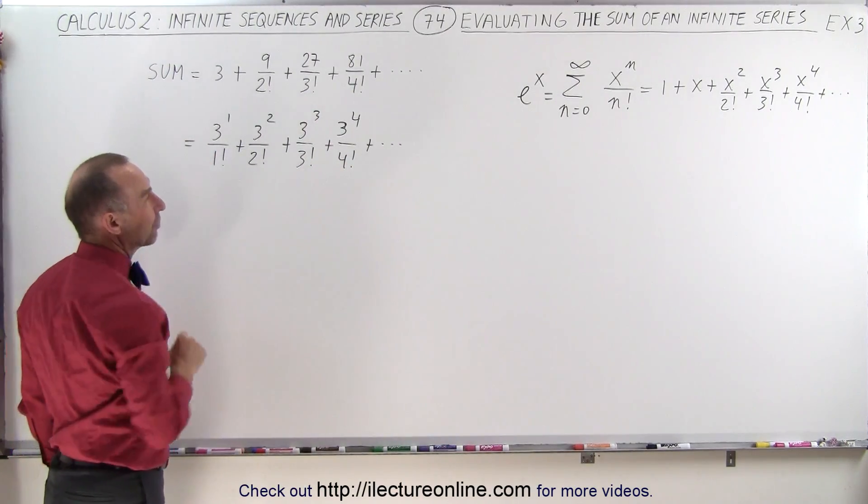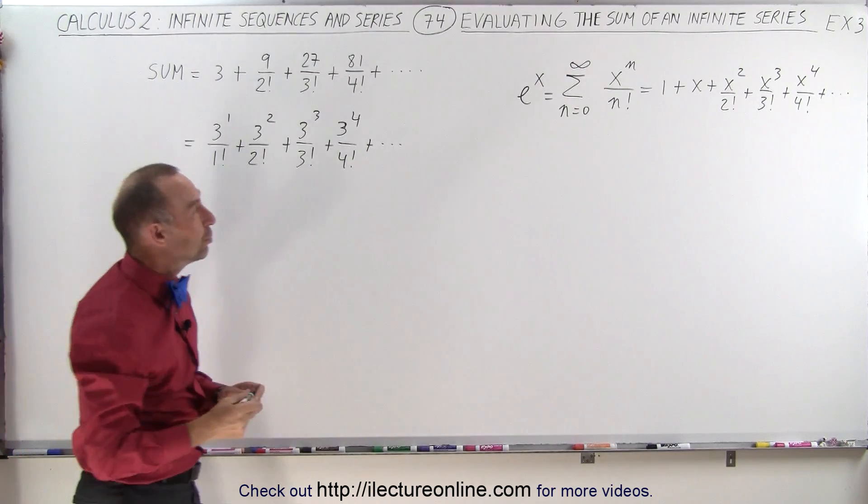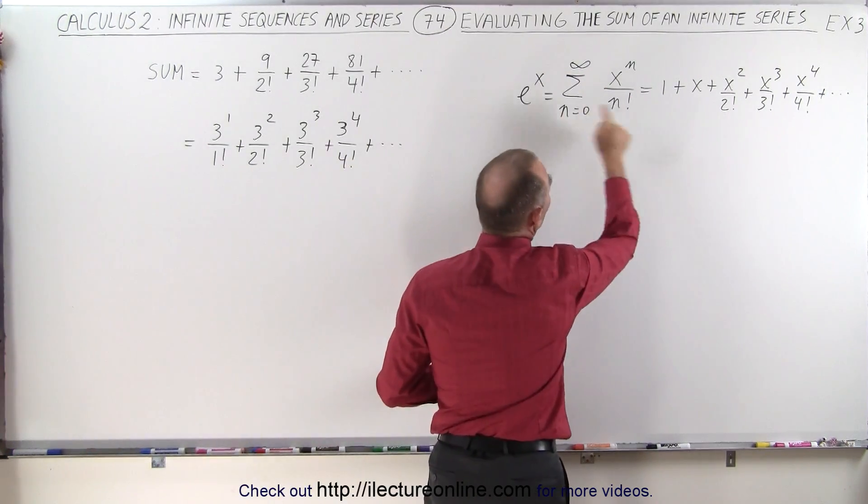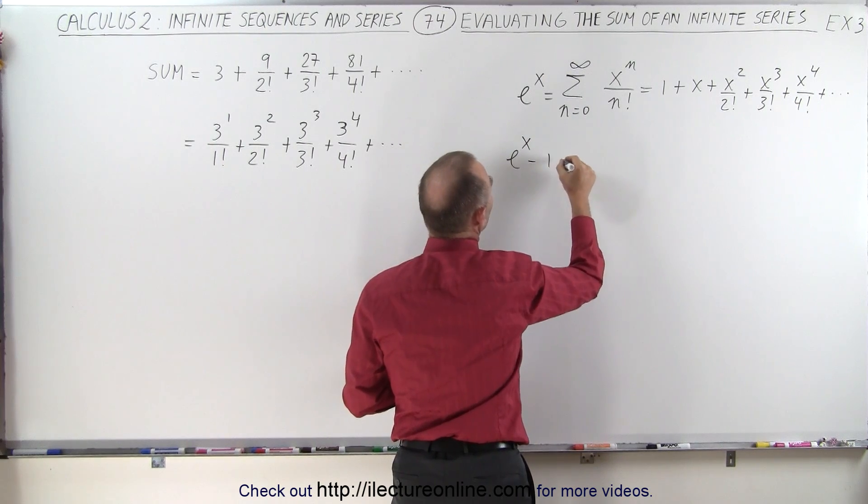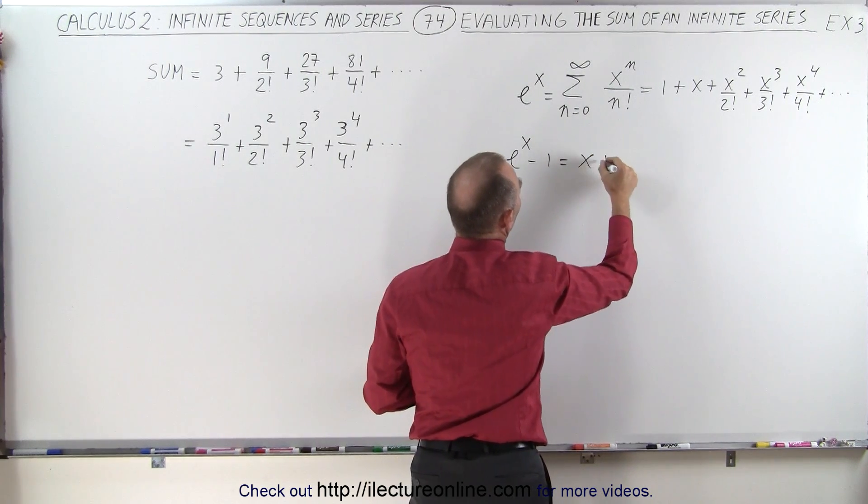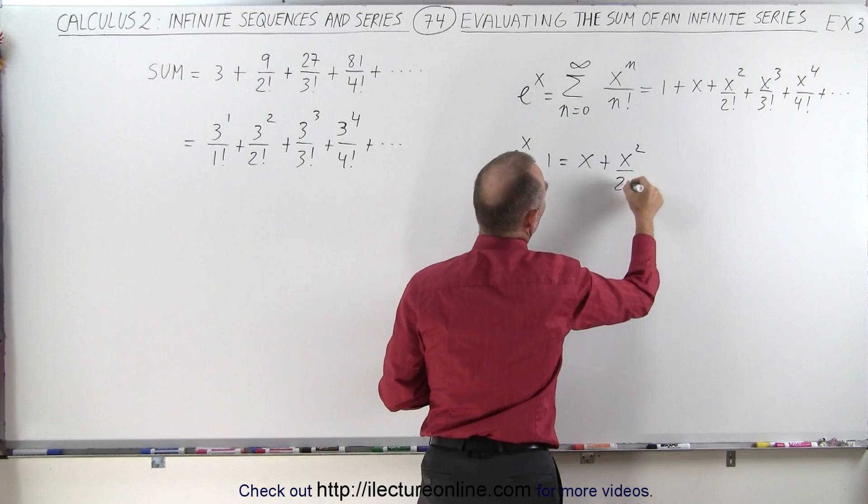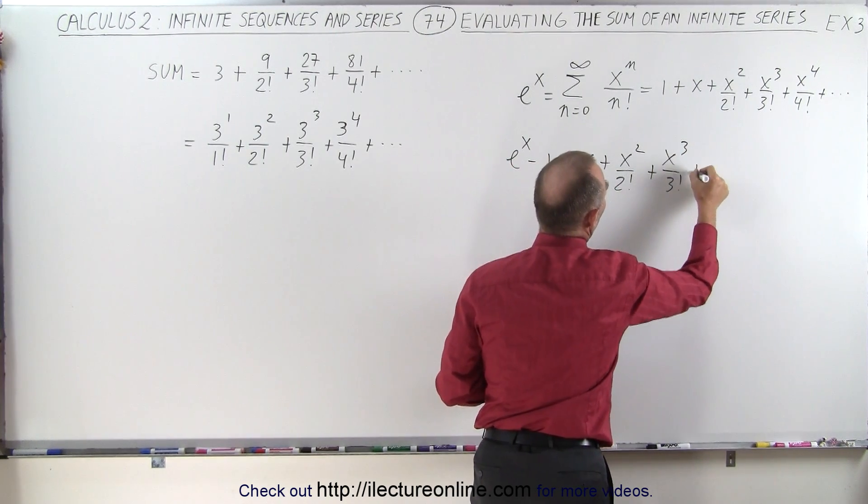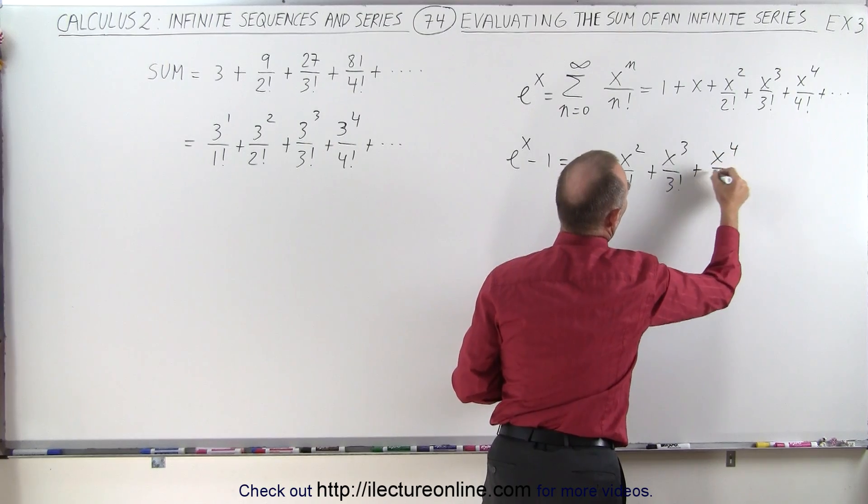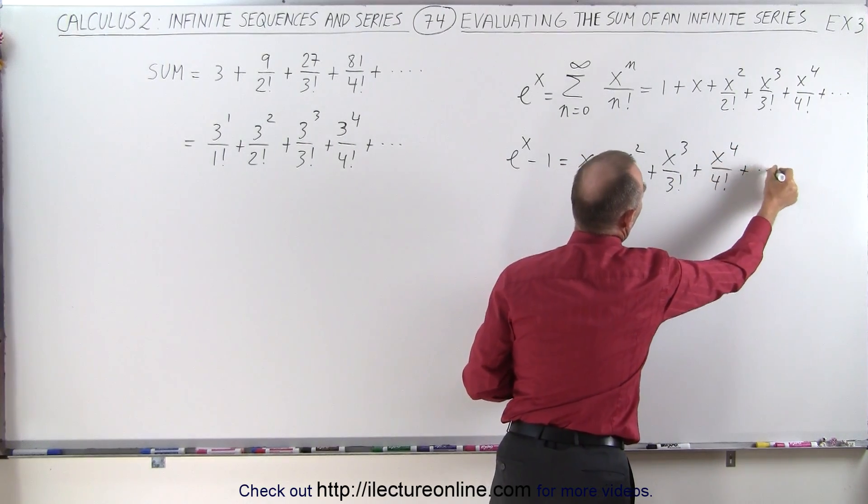And instead of x we have the number 3. So what we can do is we can subtract 1 from both sides and then write e to the x minus 1 is equal to x plus x squared over 2 factorial plus x cubed over 3 factorial plus x to the fourth power over 4 factorial and so forth.